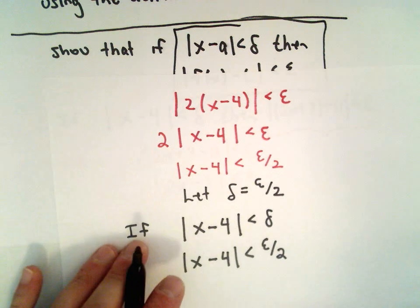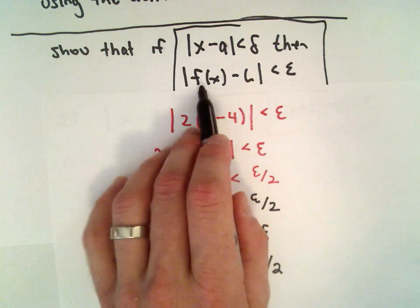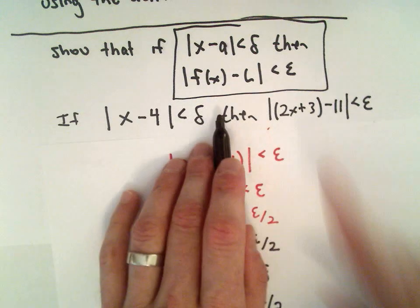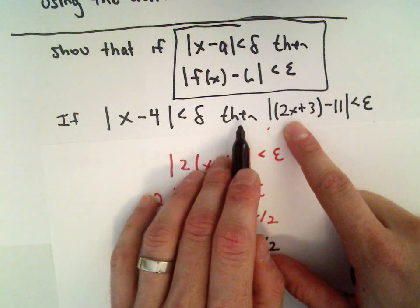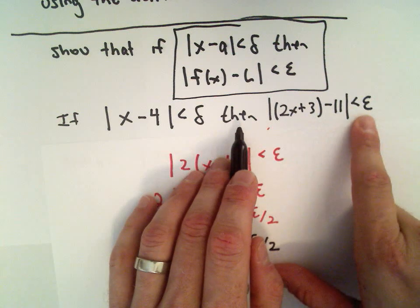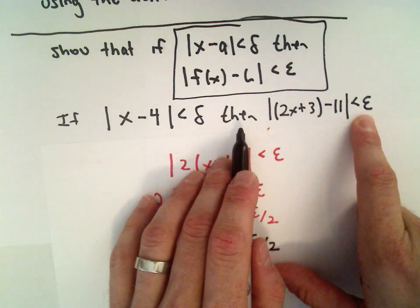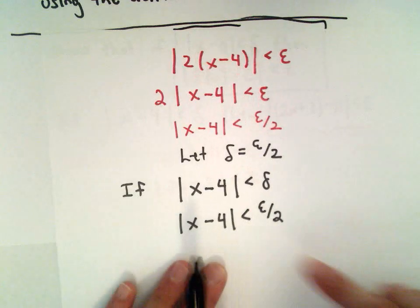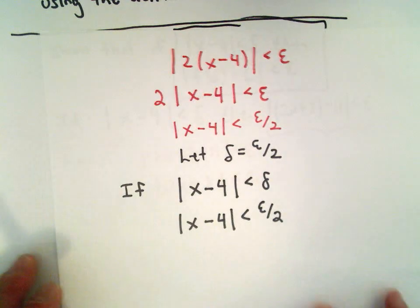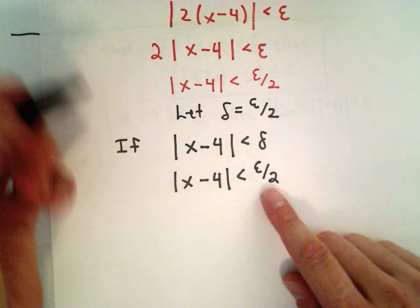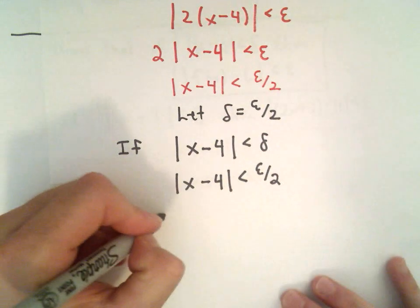Well what can we conclude from that? So eventually I want to reach the statement that says that, eventually I want to get to this statement that the absolute value of 2x plus 3 minus 11, that would be less than epsilon. If that follows from this statement, then I've proven the limit. Well again, I'm just going to basically reverse my steps. I can multiply both sides by 2.